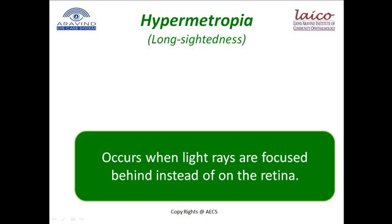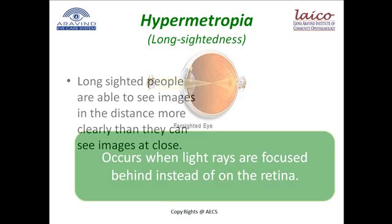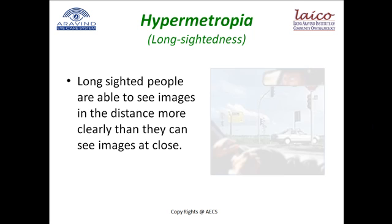Hypermetropia occurs when light rays are focused behind, instead of on, the retina, as displayed in this model. Long sighted people are able to see images in the distance more clearly than they can see images at close range. Again, this is how the person would see the same scene.